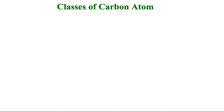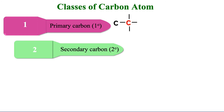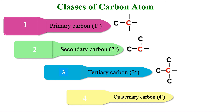Now let's look at the classes of carbon atoms. Primary carbon is a carbon atom attached to only one other carbon atom. Secondary carbon is a carbon atom attached to two other carbon atoms. Tertiary carbon is a carbon atom attached to three other carbon atoms. Quaternary carbon is a carbon atom attached to four other carbon atoms.